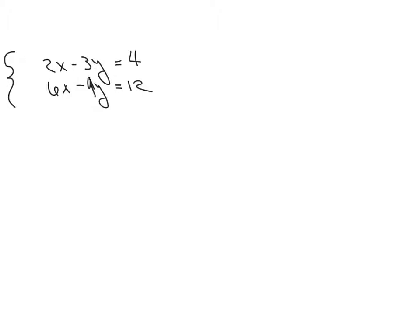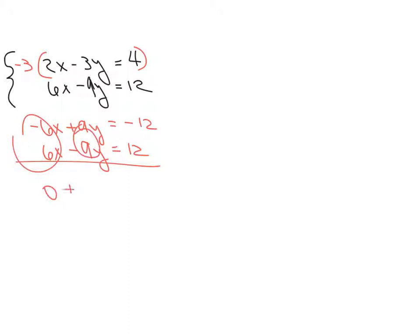So, we're going to multiply this top equation by negative 3 and that gives me negative 6x plus 9y equals negative 12 and we're going to leave the bottom one alone because we're trying to get rid of the y's and when we do that that gives me 0 that gives me 0 and that gives me 0 so 0 equals 0